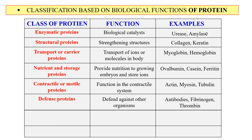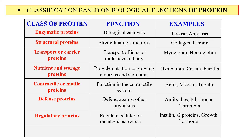Next are defense proteins — these provide defense against organisms or foreign bodies. They include antibodies, fibrinogen, and thrombin. Next, regulatory proteins — these are involved in the regulation of metabolic activity. Examples include insulin, growth hormone, and G protein. Finally, toxic proteins — as the name indicates, they are toxic and can kill or hydrolyze enzymes. Examples include snake venom and ricin.